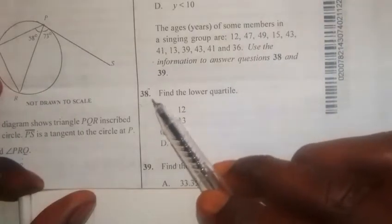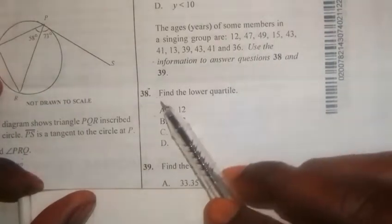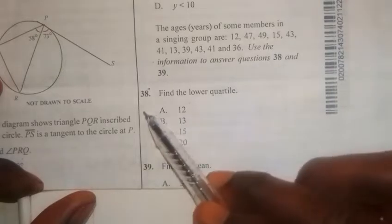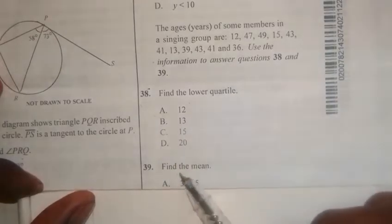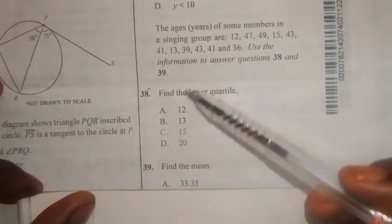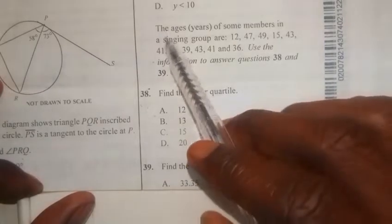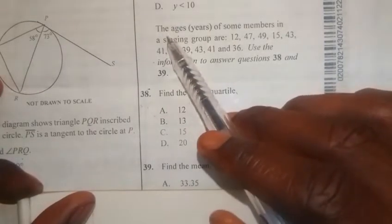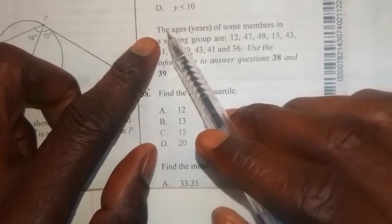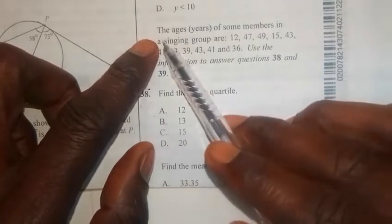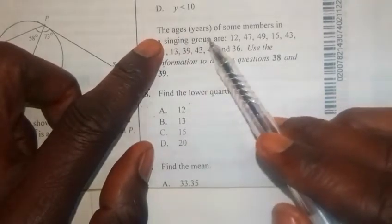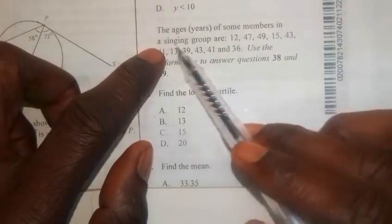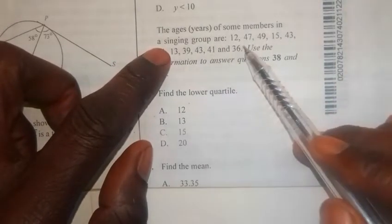Now, question 38 and 39 reads, find the lower quartile for question 38 and 39, find the mean. For us to answer these two problems, we have to look at the instructions given to us here.